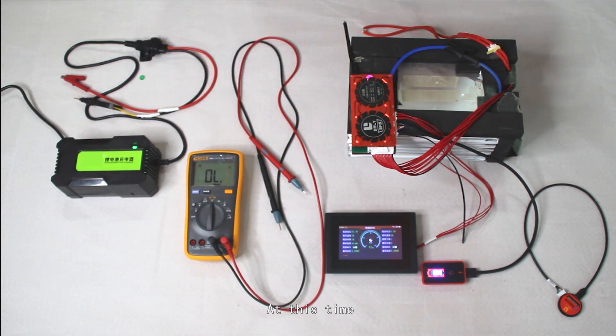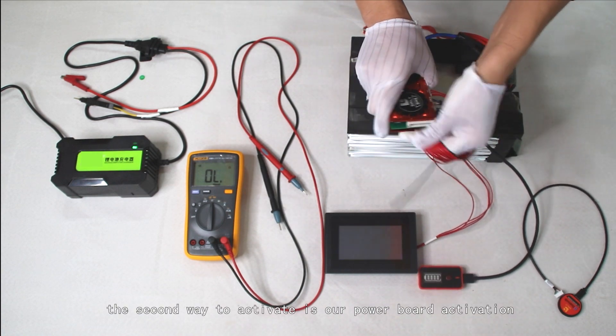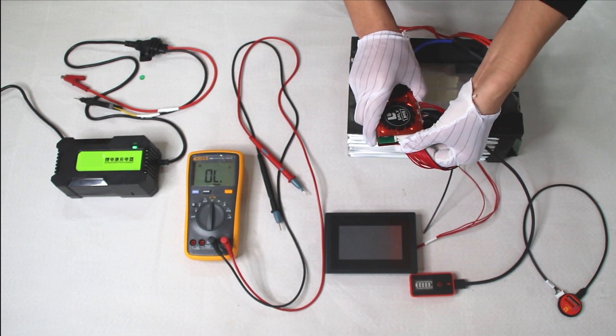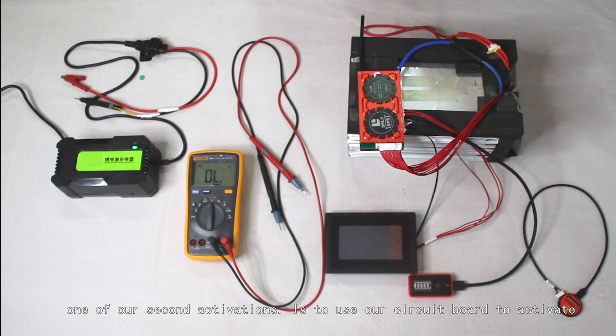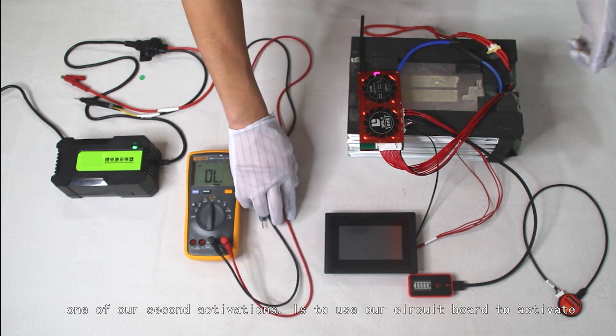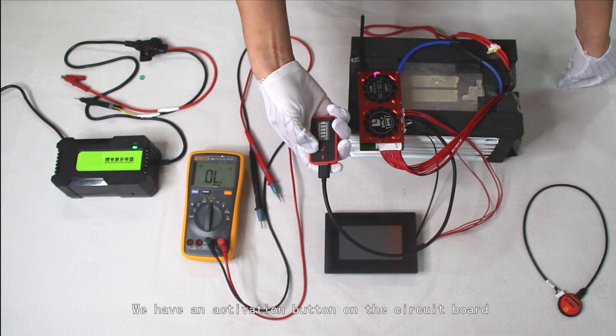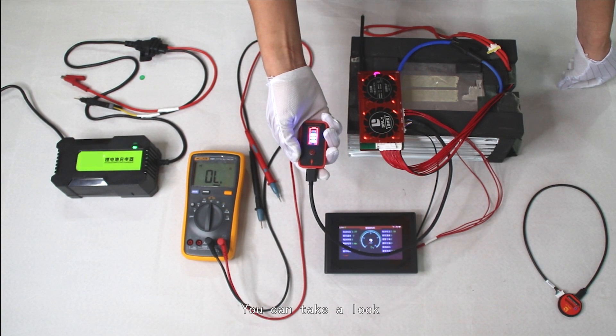Let's demonstrate the second way to activate using our power board. We have an activation button on the circuit board - we just need to press it. You can see now it's activated.